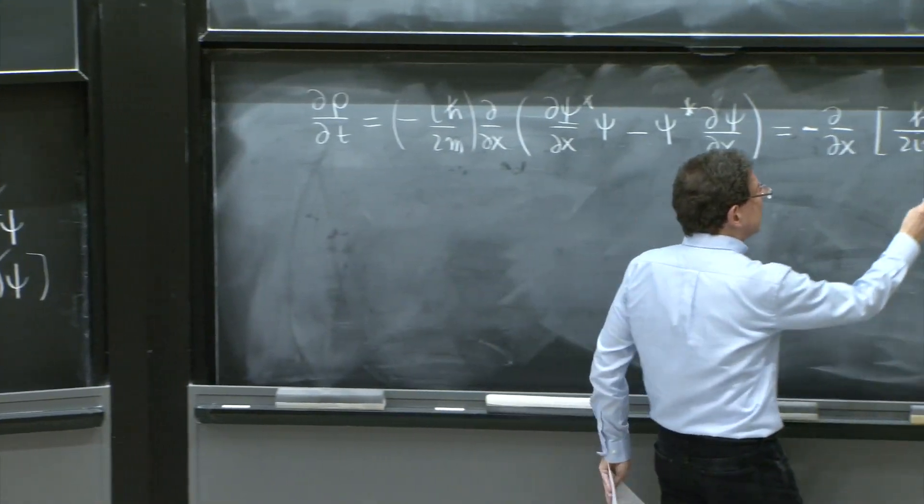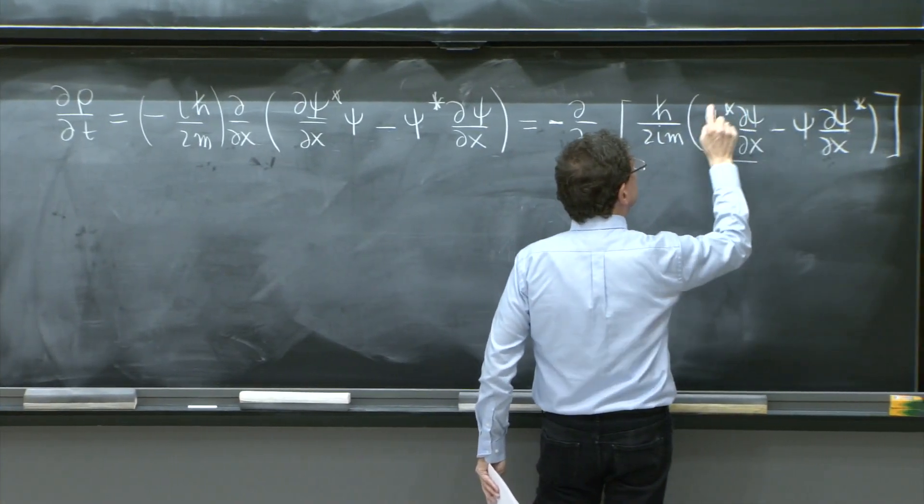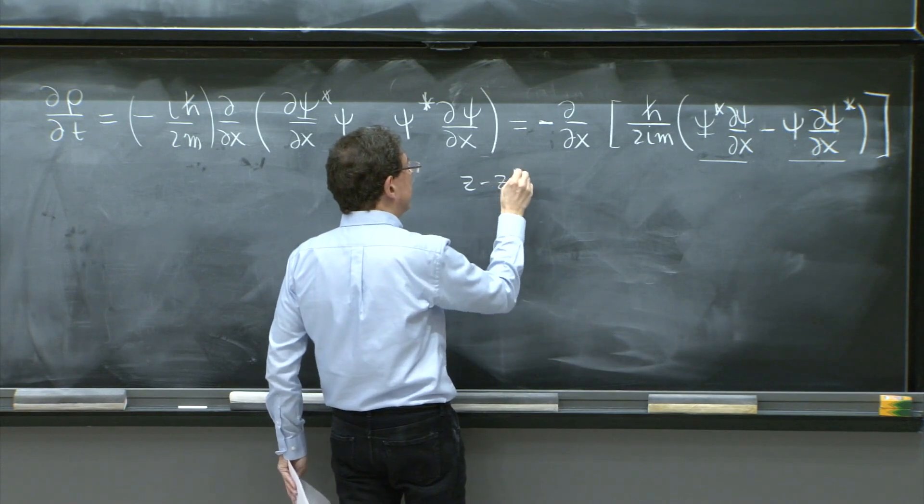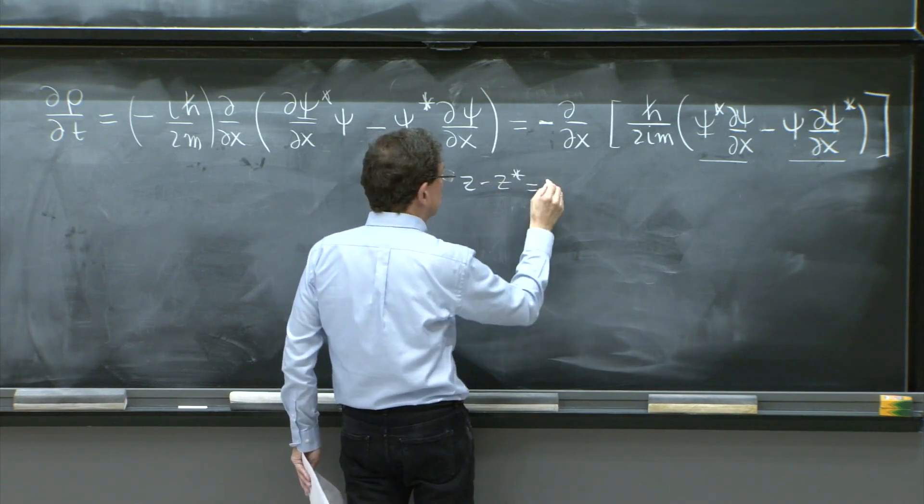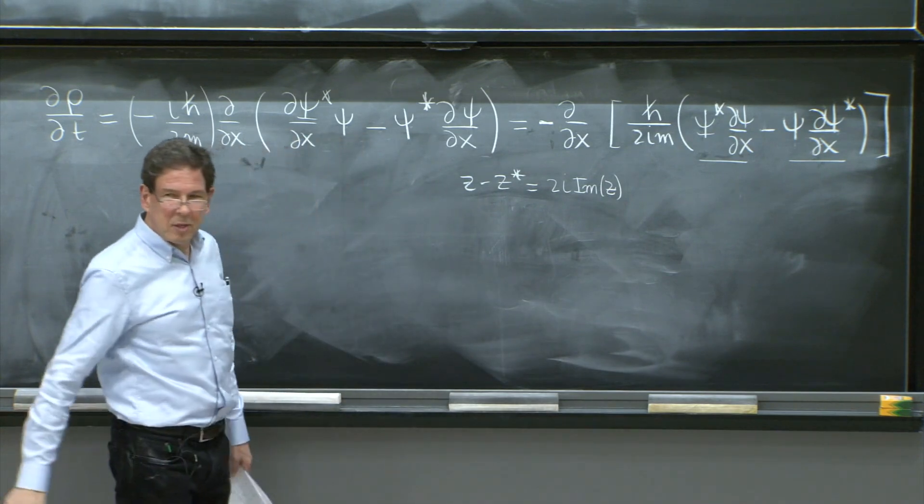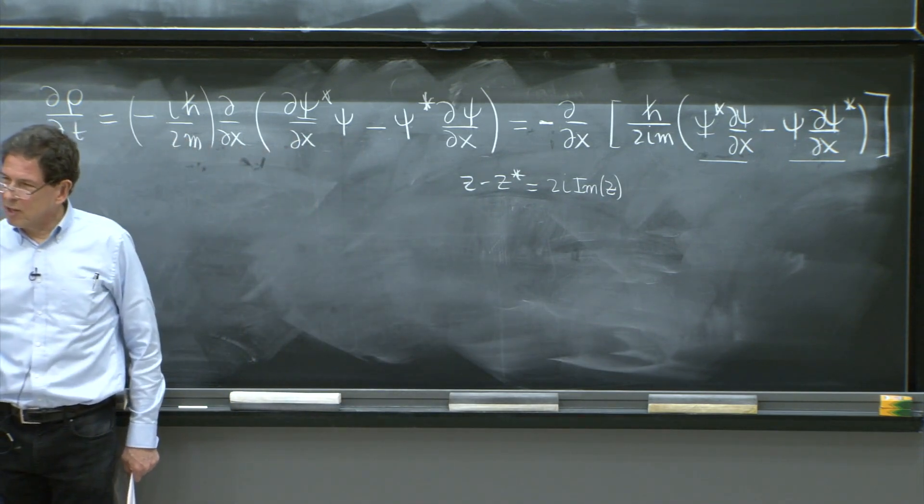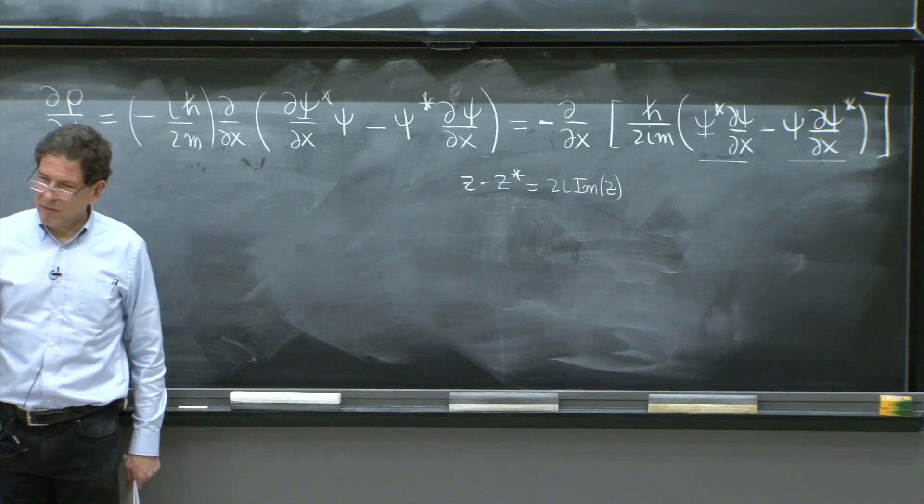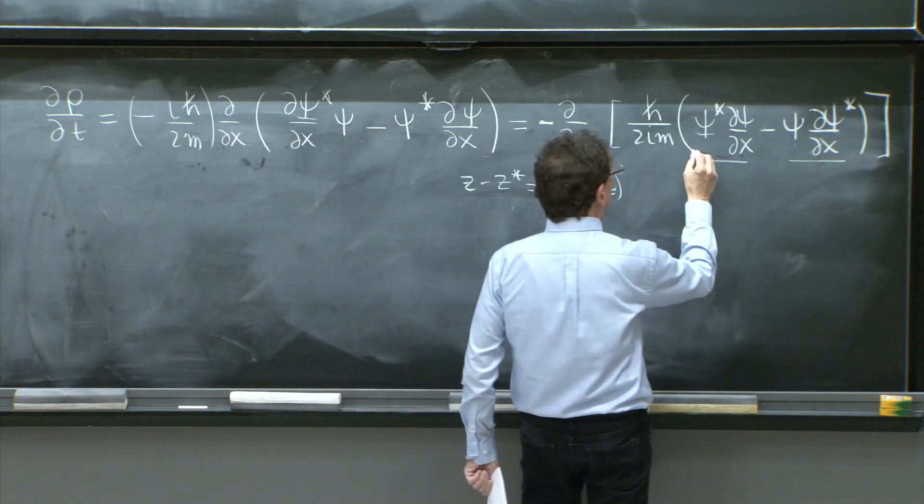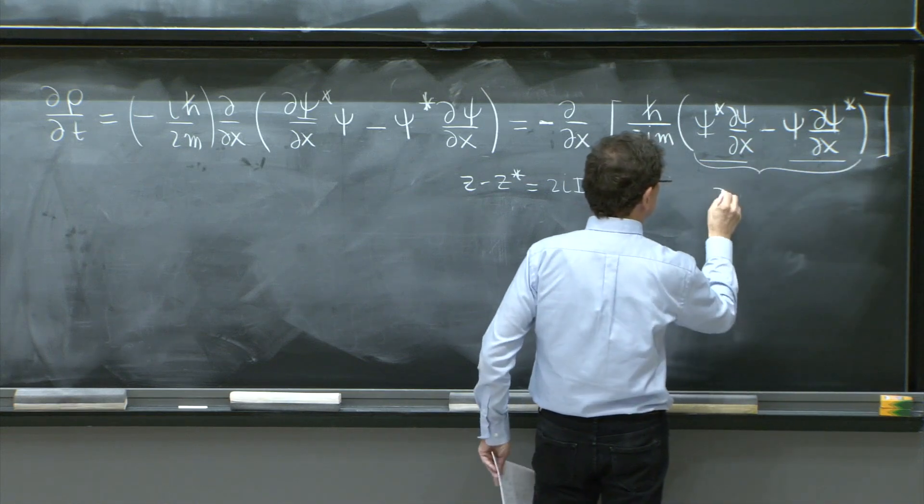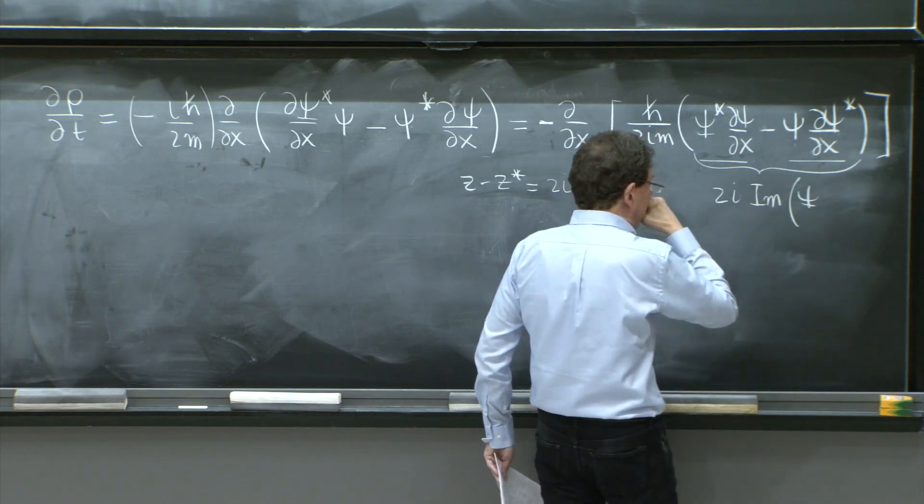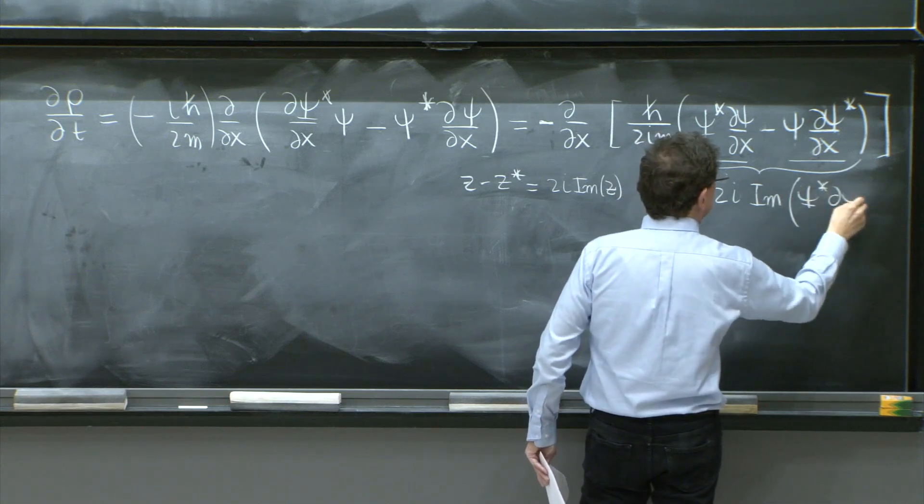So here you see that you have a complex number minus its complex conjugate. So this is like z minus z star, which is equal to twice i times the imaginary part of z. If you subtract from a complex number its complex conjugate, you get the imaginary part only survives, but it's twice of it.